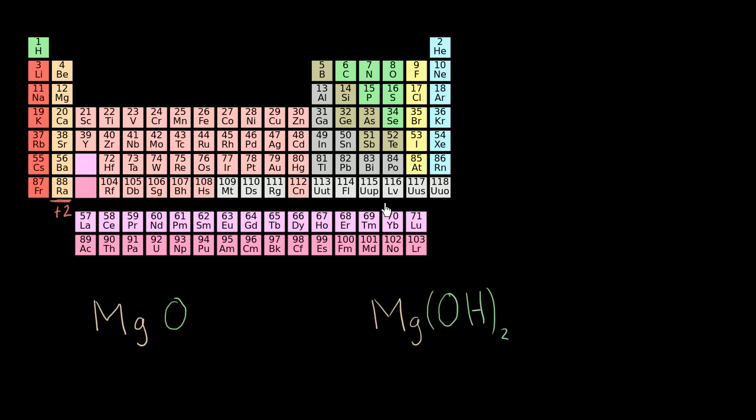So magnesium would typically have a +2 oxidation state. On the other side of the periodic table, oxygen group seven. It has six valence electrons. It's very electronegative, so electronegative that oxidation is named for it.